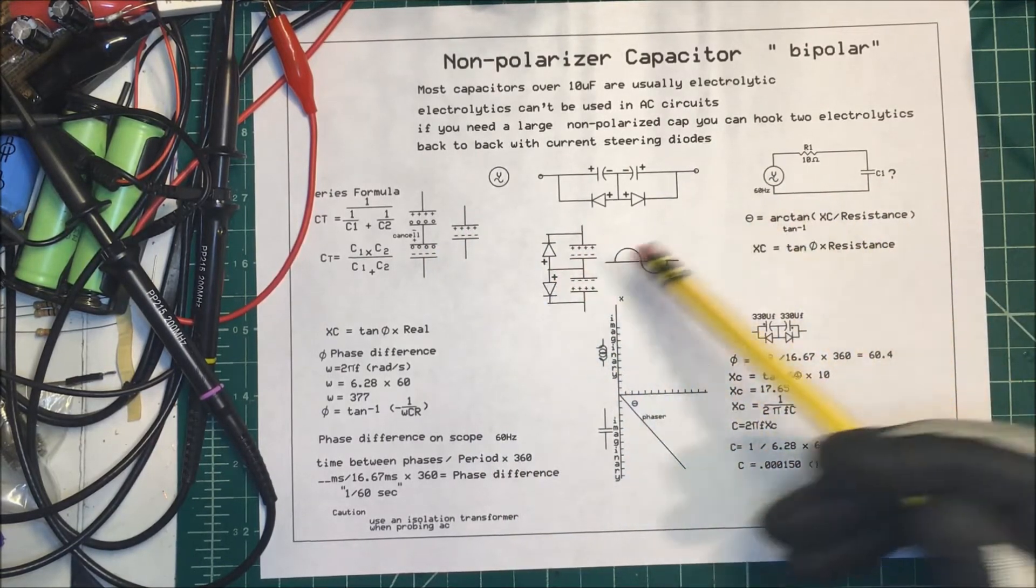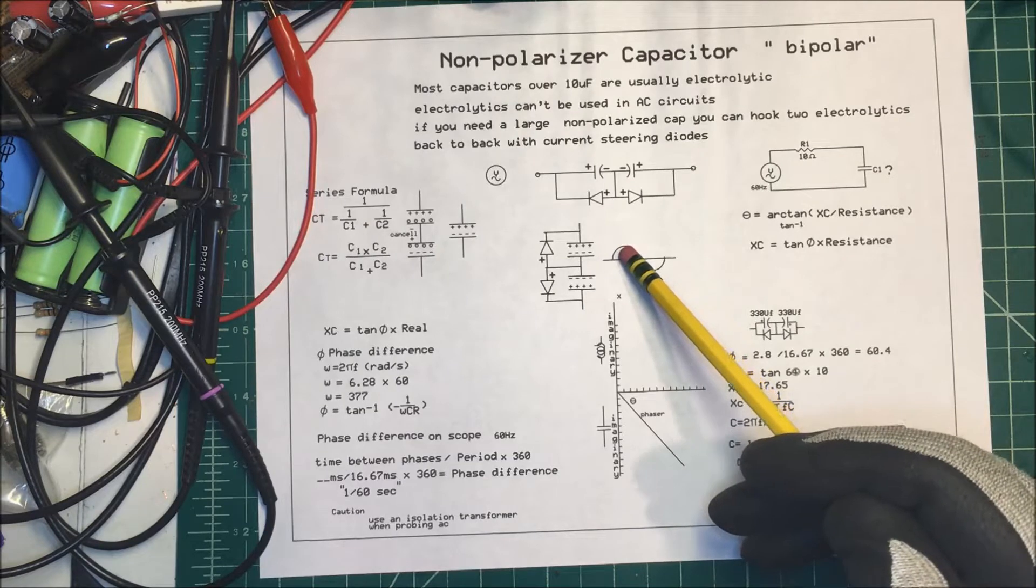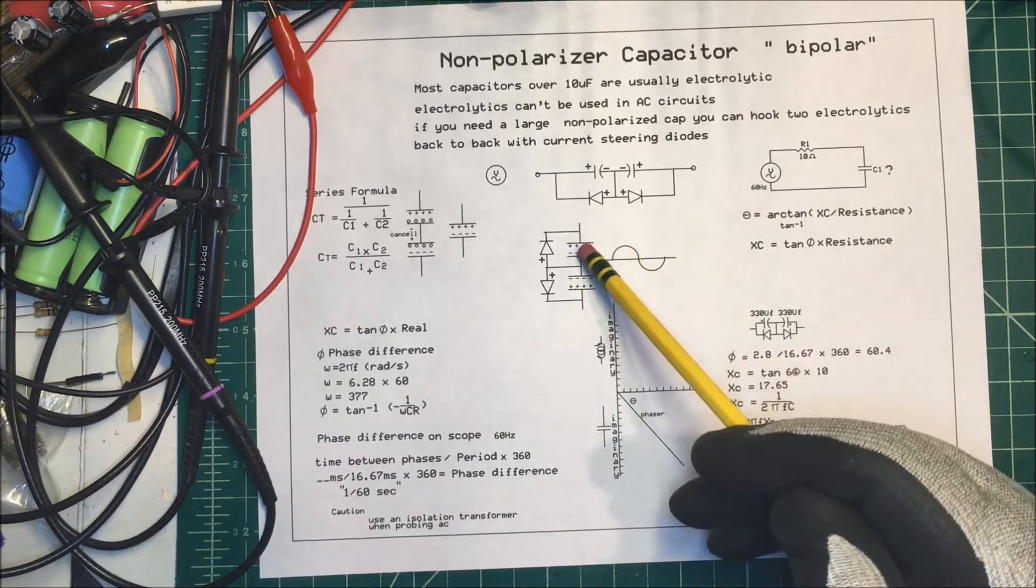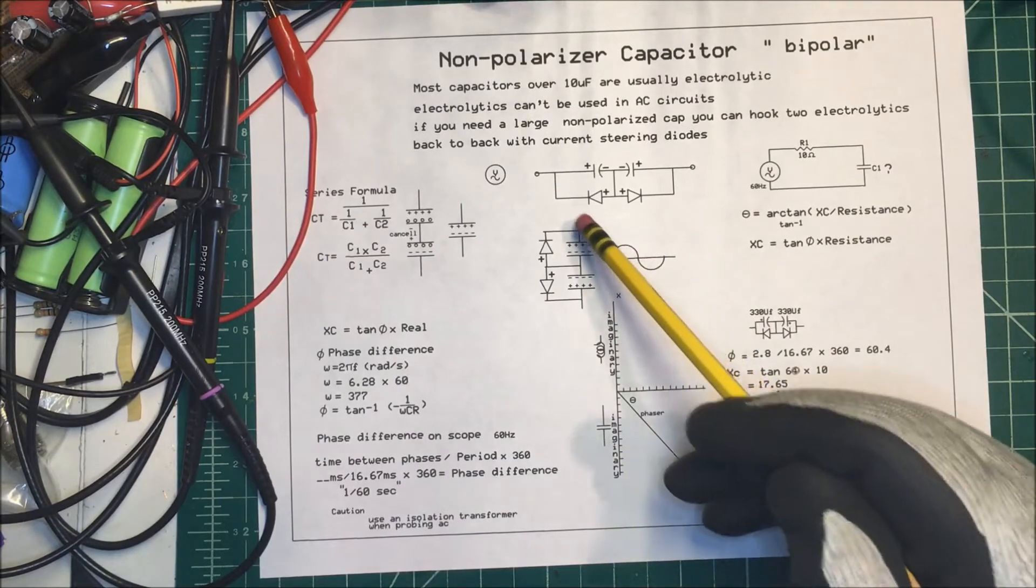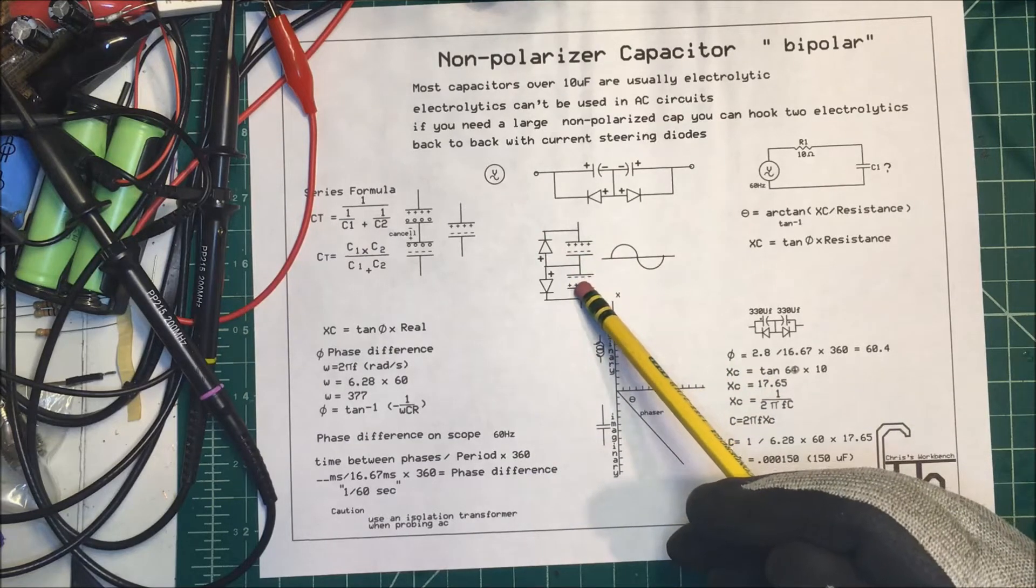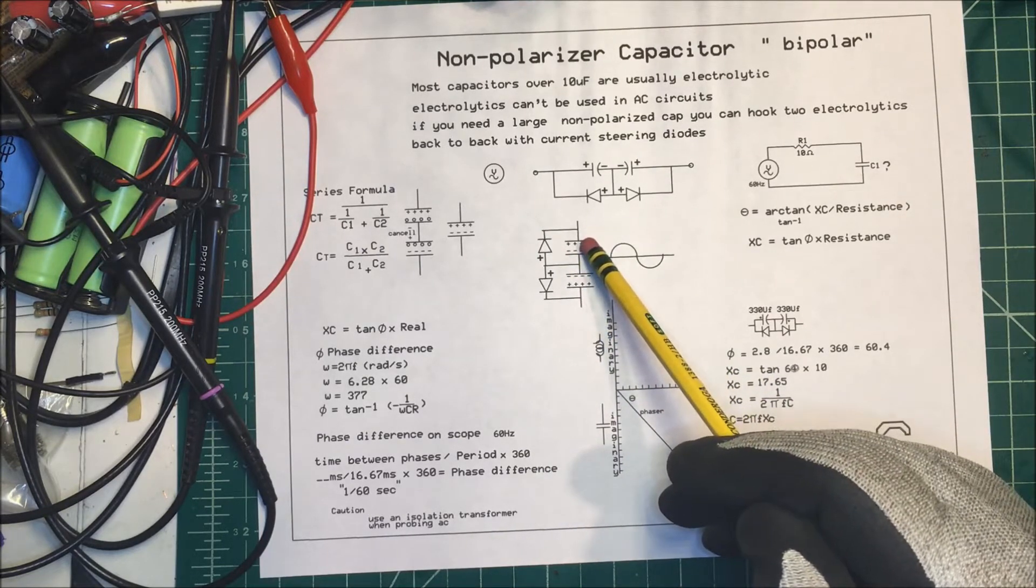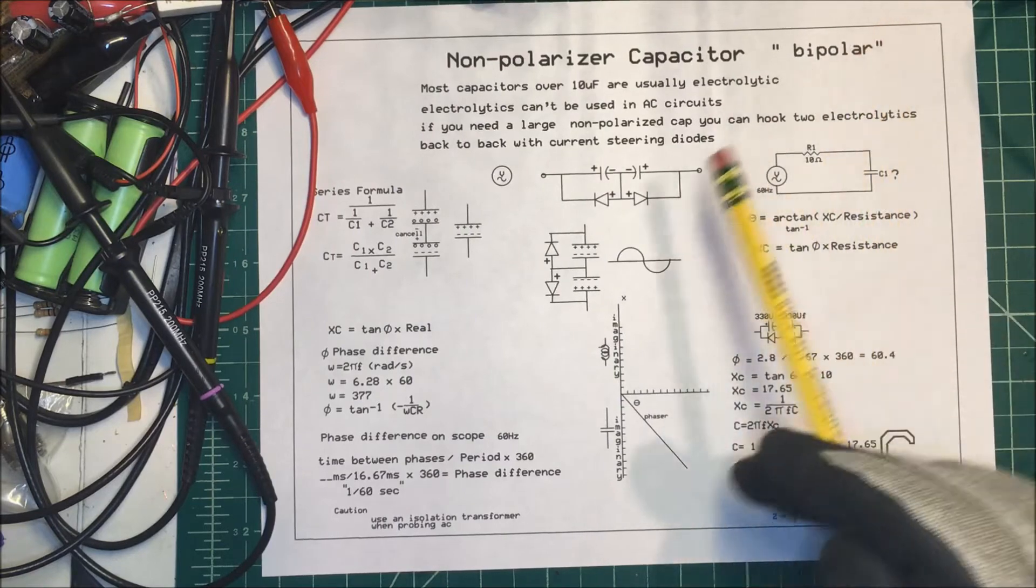Over here, what's happened is on the positive side of the sine wave, we're going to charge this capacitor, and then on the negative side, it's going to come through here and charge this capacitor over here. So they're just charging on half the cycle.